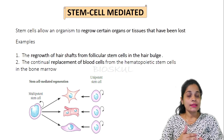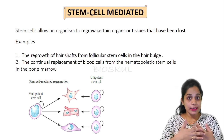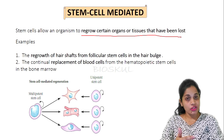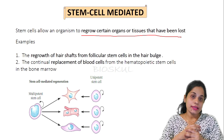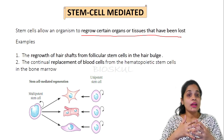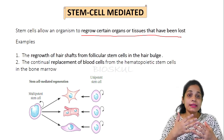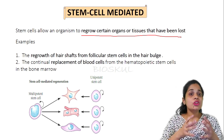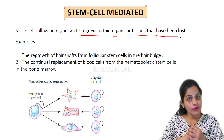What is stem cell mediated regeneration? Stem cells are unique cells that have the ability to self-renew. They allow the organism to regrow certain organs and tissues that have been lost. There are different types of stem cells: totipotent stem cells, which have the ability to develop into an entire organism from a zygote; pluripotent stem cells, which can generate many types of cells; multipotent stem cells, which develop some types of cells; and unipotent stem cells, which develop only one type of cell.